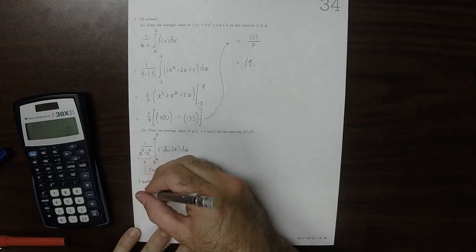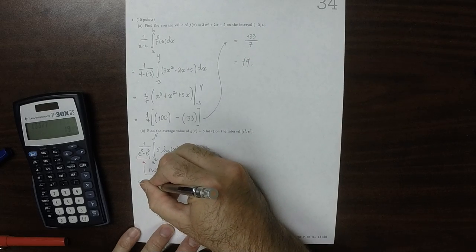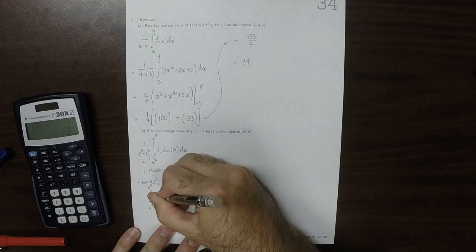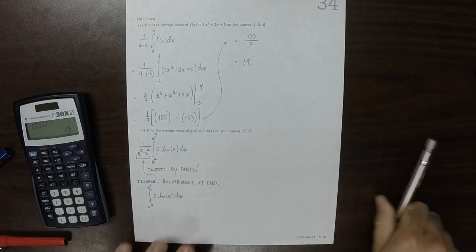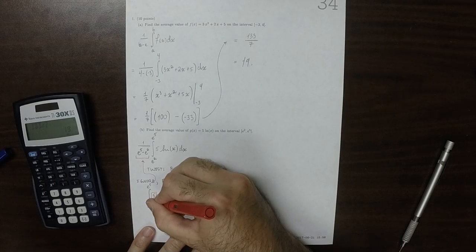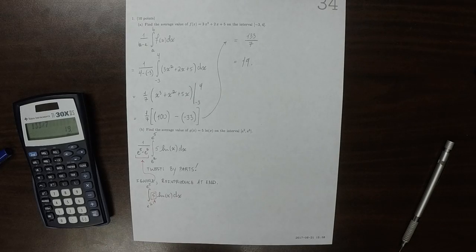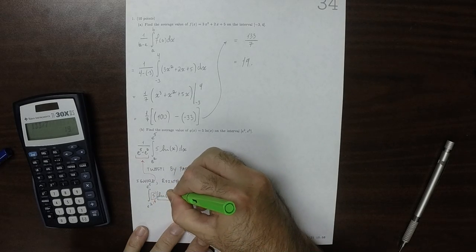So I'm just going to do integral e squared to e to the 5, 5 log x dx. And I'm going to have to use by parts. So this is an algebraic part, and this is a logarithmic part.